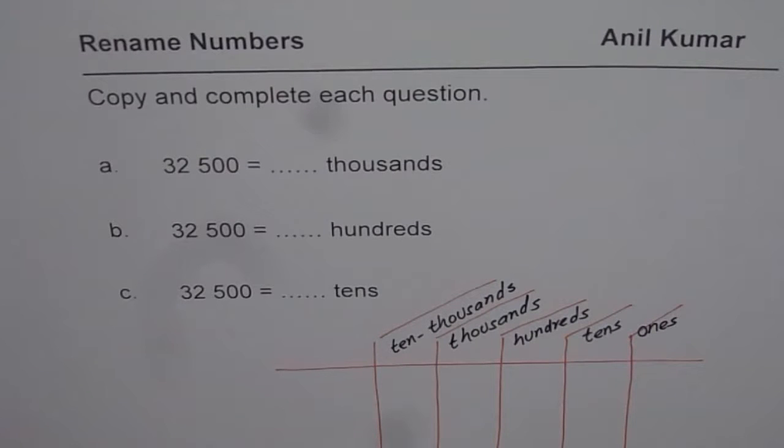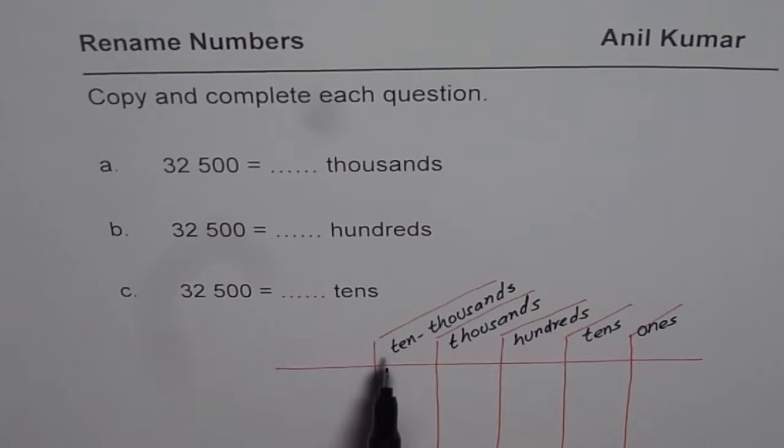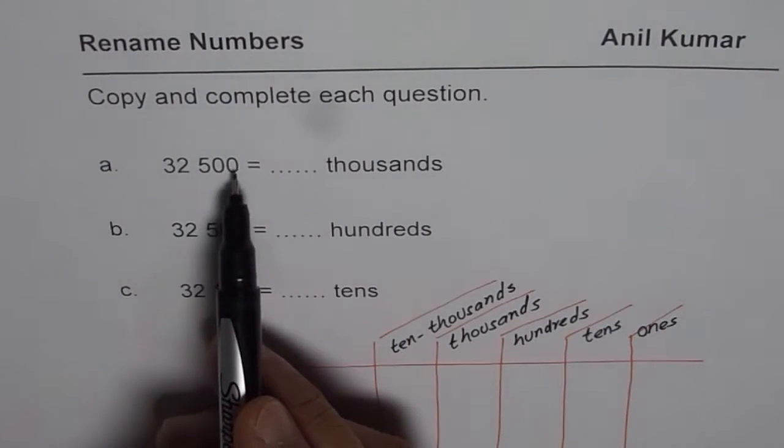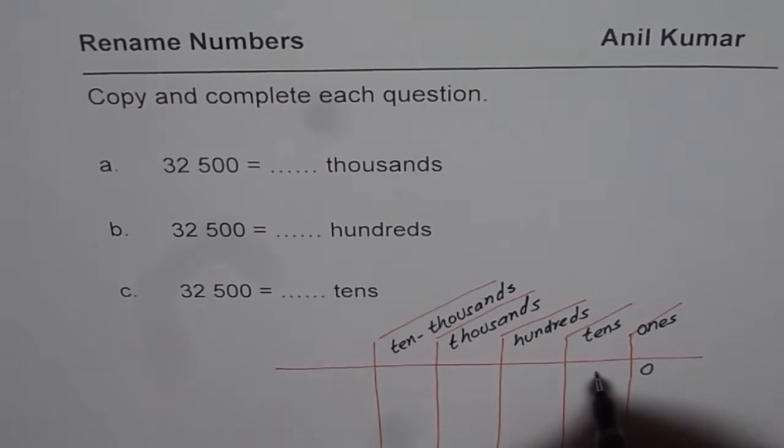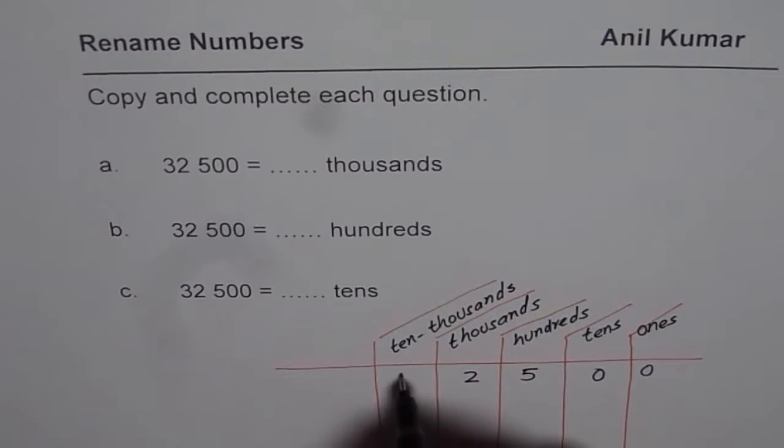So we have the number which is 32,500. Three comes in ten thousands place. You can actually start writing from the rightmost side. So it is zero, zero, five, two, three.